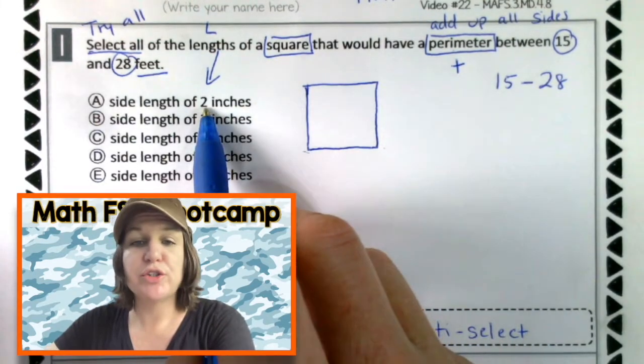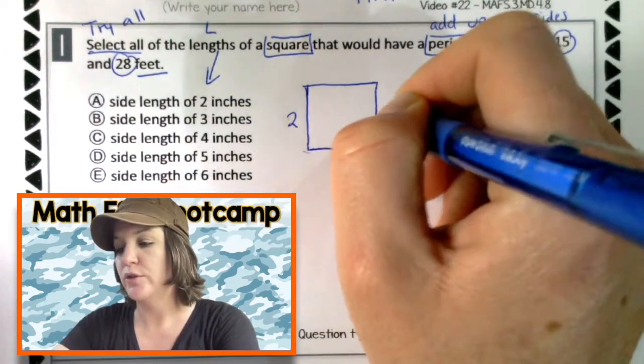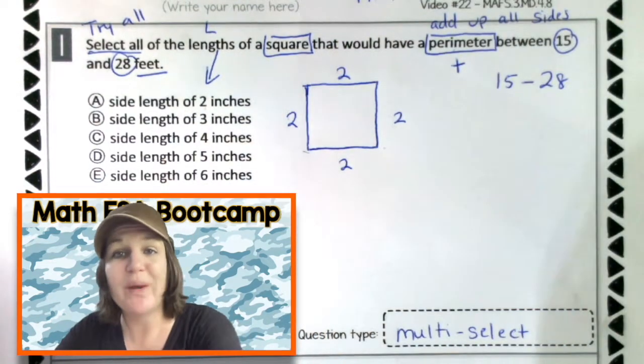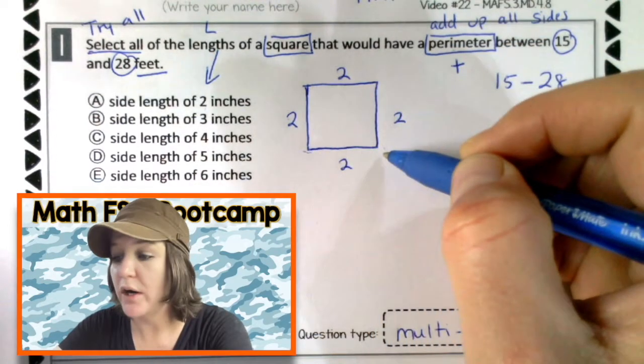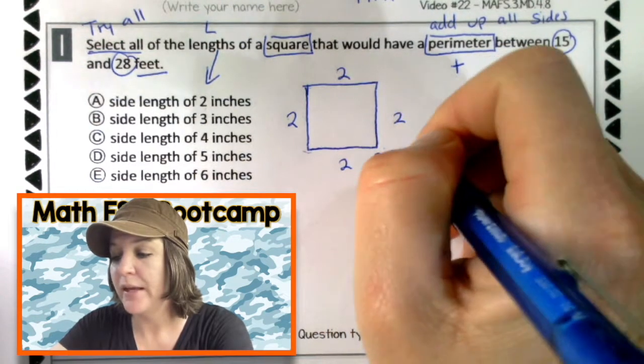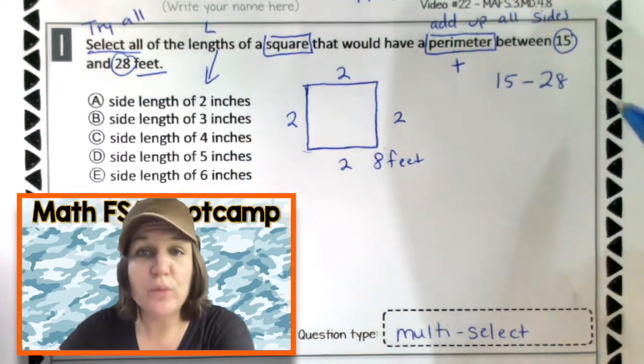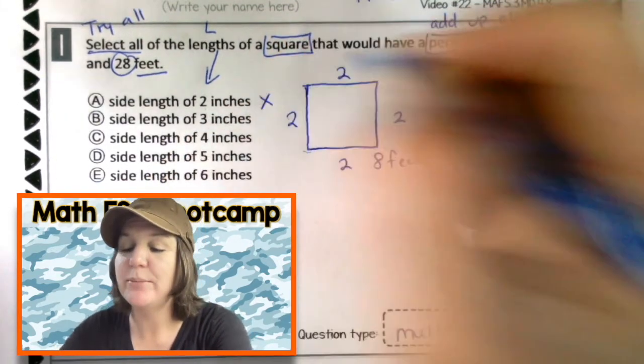All right, so let's try it. If there were two inches, that would be two, two, two, and two. If we added up all the sides, that would be two, four, six, eight. Eight feet. Is that between 15 and 28? No, it is less than that. So, we can eliminate A.